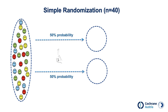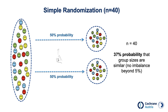Let's assume we randomize 40 participants using simple randomization. We would like to have similar sample sizes in the two treatment groups, but with simple randomization and a small sample of 40 participants, this is difficult to achieve. When we randomize 40 participants, the probability that sample sizes are similar is only 37%. In other words, chances that we end up with two imbalanced groups are pretty high. However, if we increase the sample size to 300 and still use simple randomization, the probability of achieving similar group sizes increases to 91%.